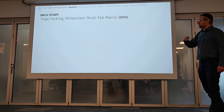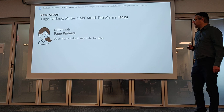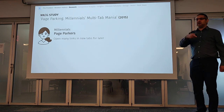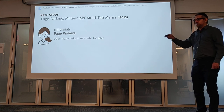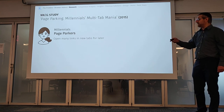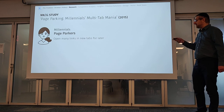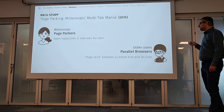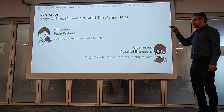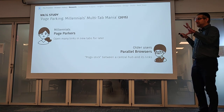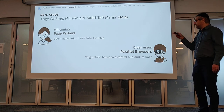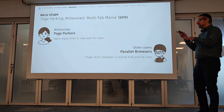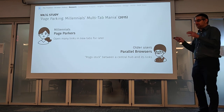A Normal Group study in 2015 found that millennials are most likely to be page parkers — they open a bunch of links for later, then go through them all. Older users are more likely to be parallel browsers, meaning they have several tabs open for different tasks, and within each task they pogo-stick between a central hub and all the links it links to — going to a link, going back, going to another, and so on.